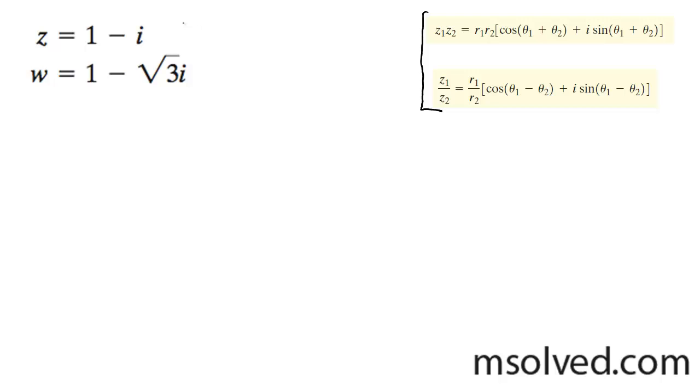For this one, r is going to be root 2 because 1 squared. Even though it's i, you can just pretend the coefficient in front of it and use that to find the magnitude of r. So in this case, it's root 2. So x is 1, y is negative 1, so that means it's going to be 315 degrees for theta.